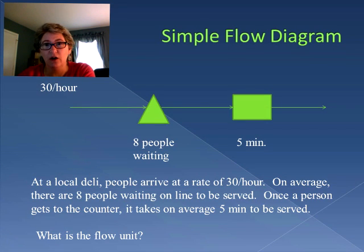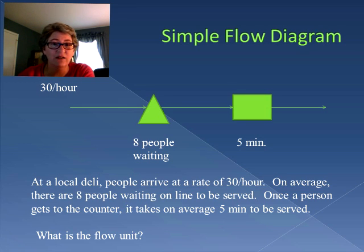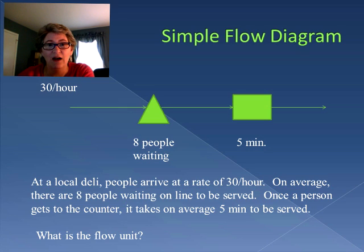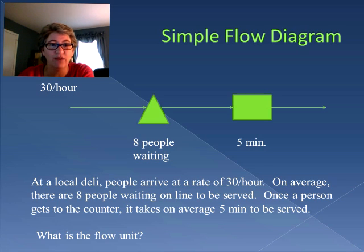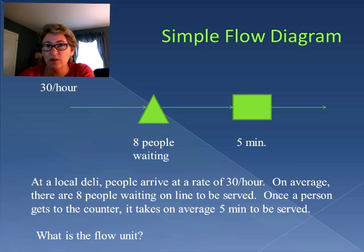Here we have a simple flow diagram showing what's going on inside the process of a delicatessen. People walk into the deli, they wait online, they get served at the counter, and then they leave. We have an arrow showing an input into the process, and people are coming into the deli at a rate of 30 per hour. Then they wait online — on average, there are eight people waiting, represented by the triangle. Triangles represent buffers, and buffers represent units that are waiting.